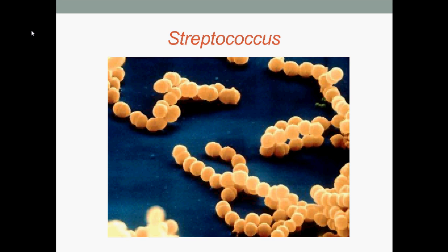Hello everybody. Today we are going to look at gram-positive cocci — bacteria that retain crystal violet instead of taking up the counter-stain safranin, hence they appear purple under the microscope on the gram stain. In this lecture, we will focus on the genus streptococcus, but before we go through streptococcus, we will go through enterococcus very briefly.